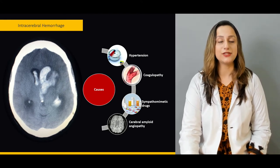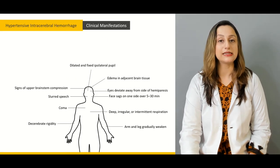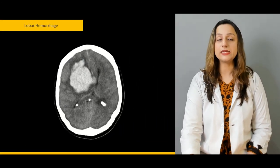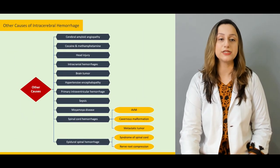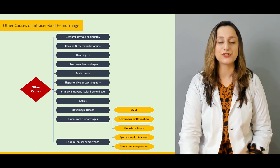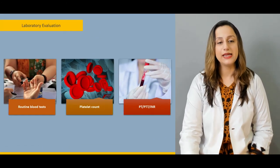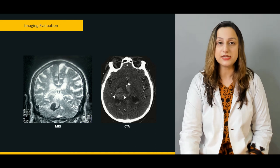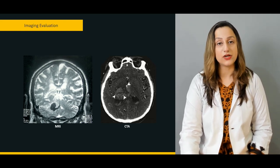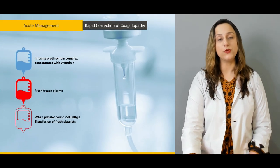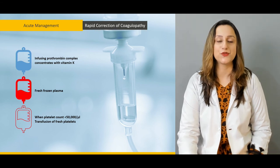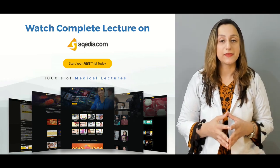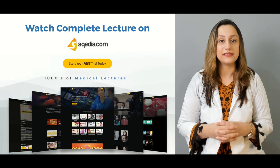The causative factors of intracerebral hemorrhages will be discussed, along with the clinical manifestations of hypertensive intracerebral hemorrhages, particularly lobar hemorrhages and their clinical manifestations. How to evaluate these patients through laboratory findings and radiological investigations will also be covered, as well as acute management techniques ranging from infusion of vitamin K and other relevant factors.